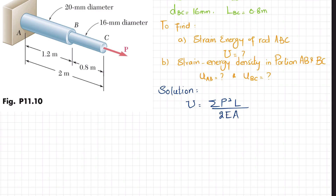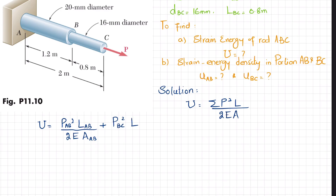We will apply this formula here. Since we have two rods, this formula splits into: P_AB² times length of AB divided by 2E times area of AB, plus P_BC² times length of BC divided by 2E times area of BC.